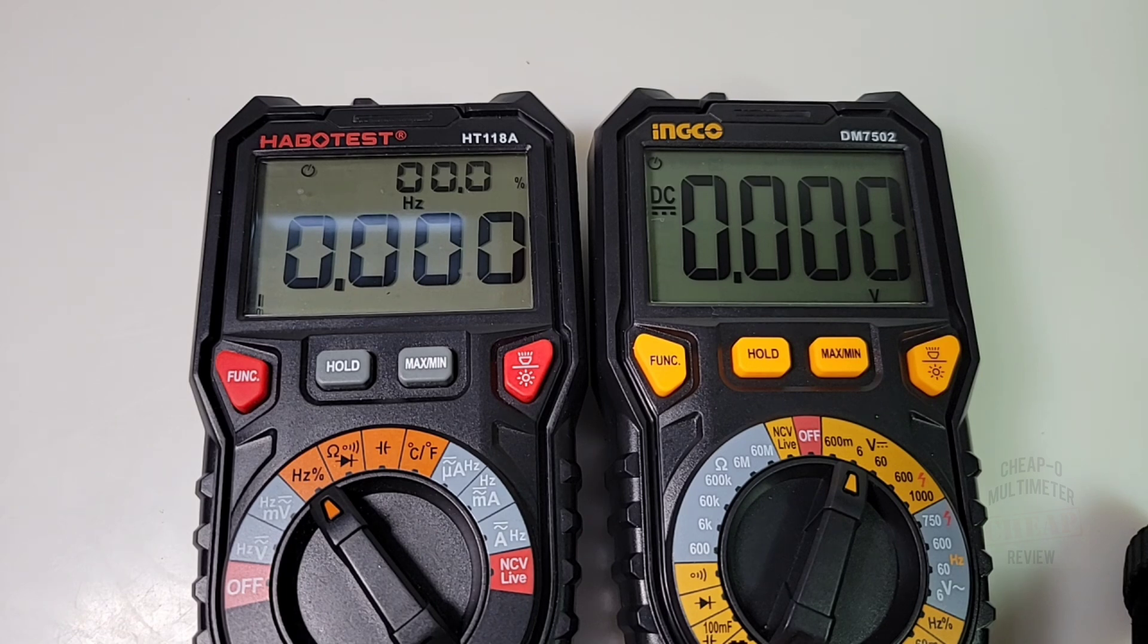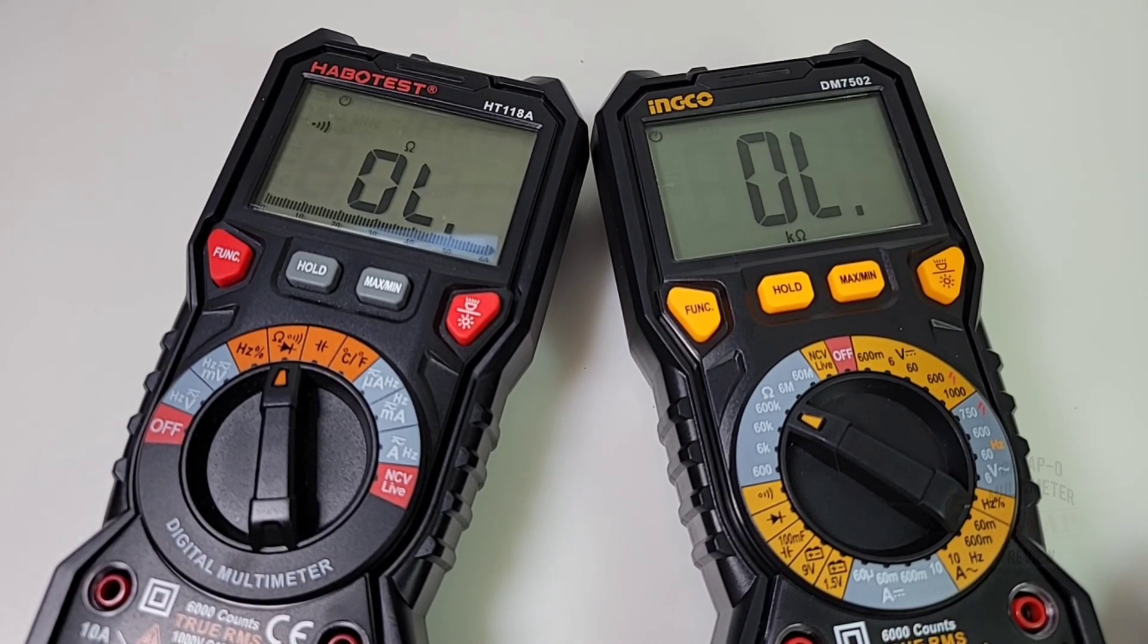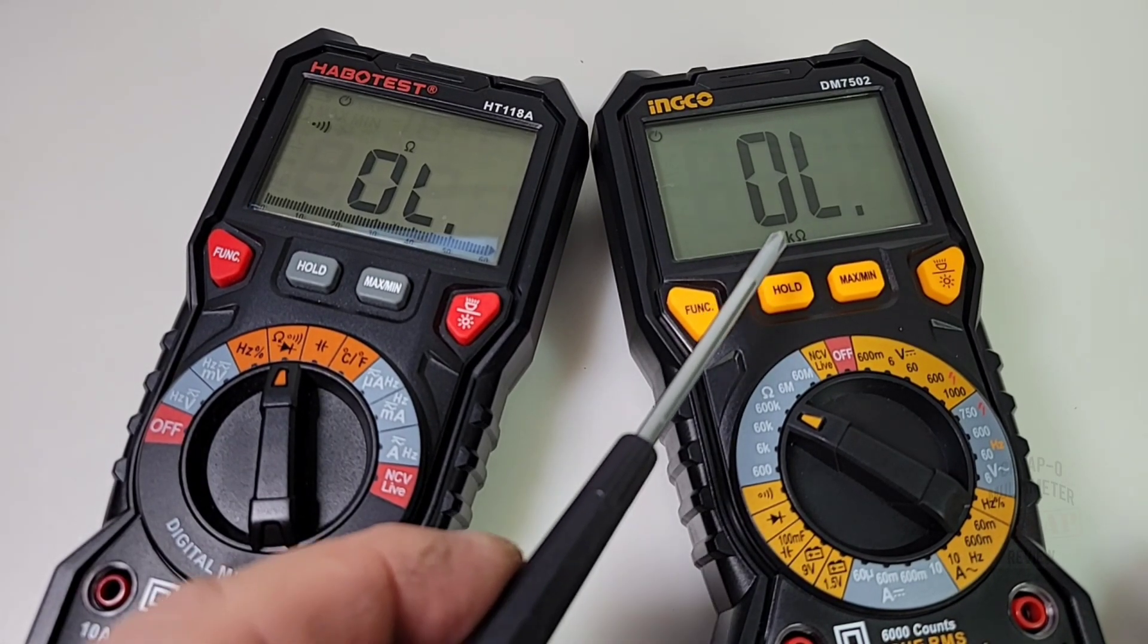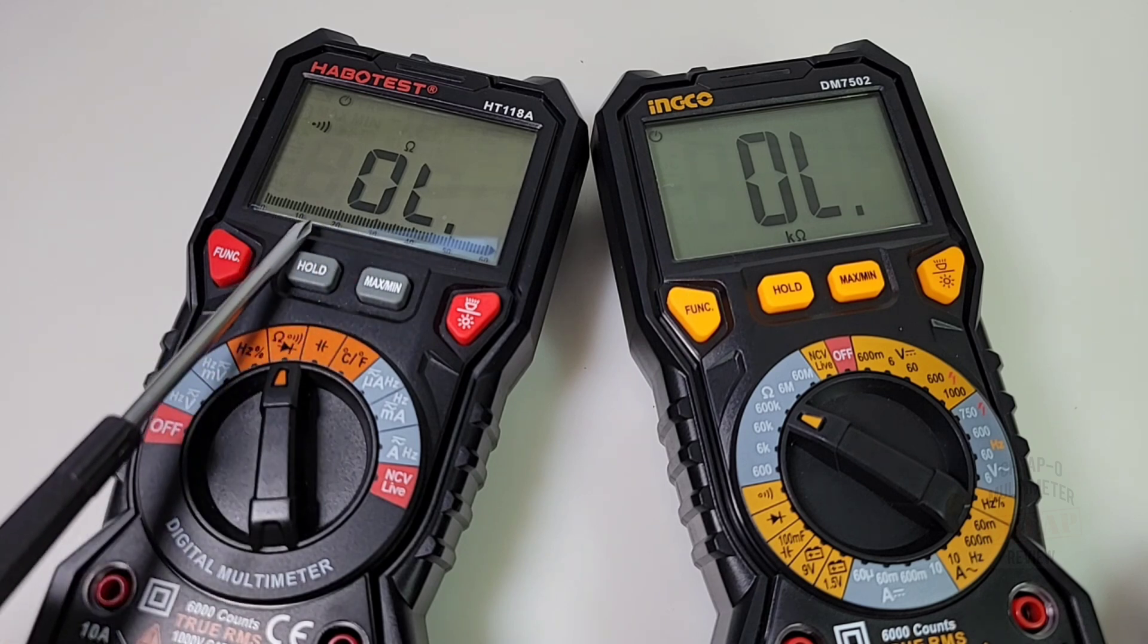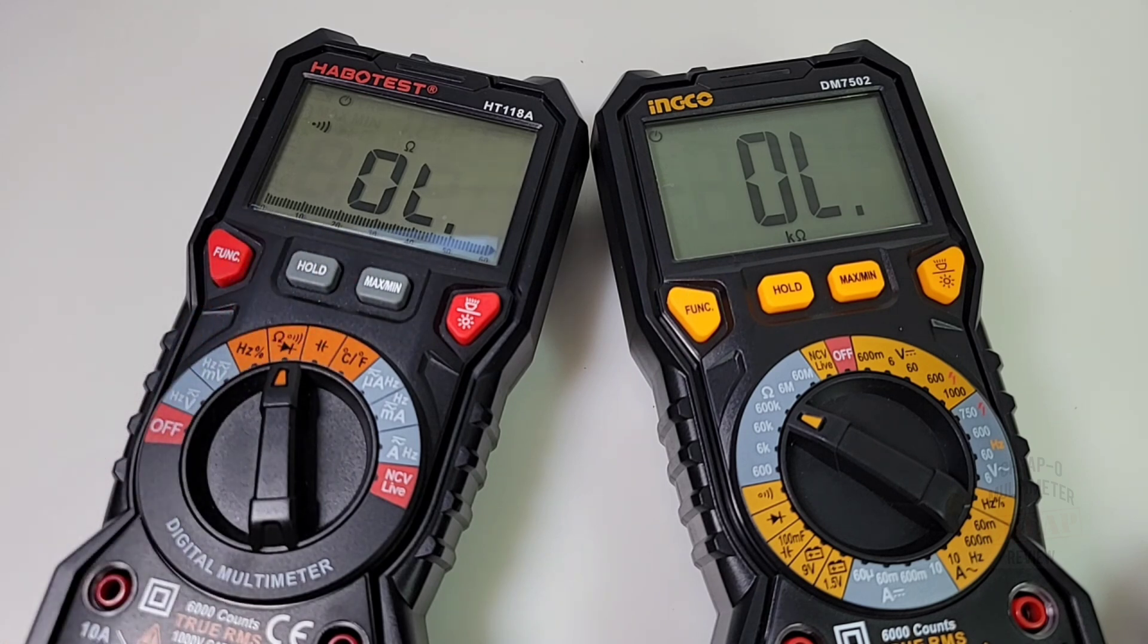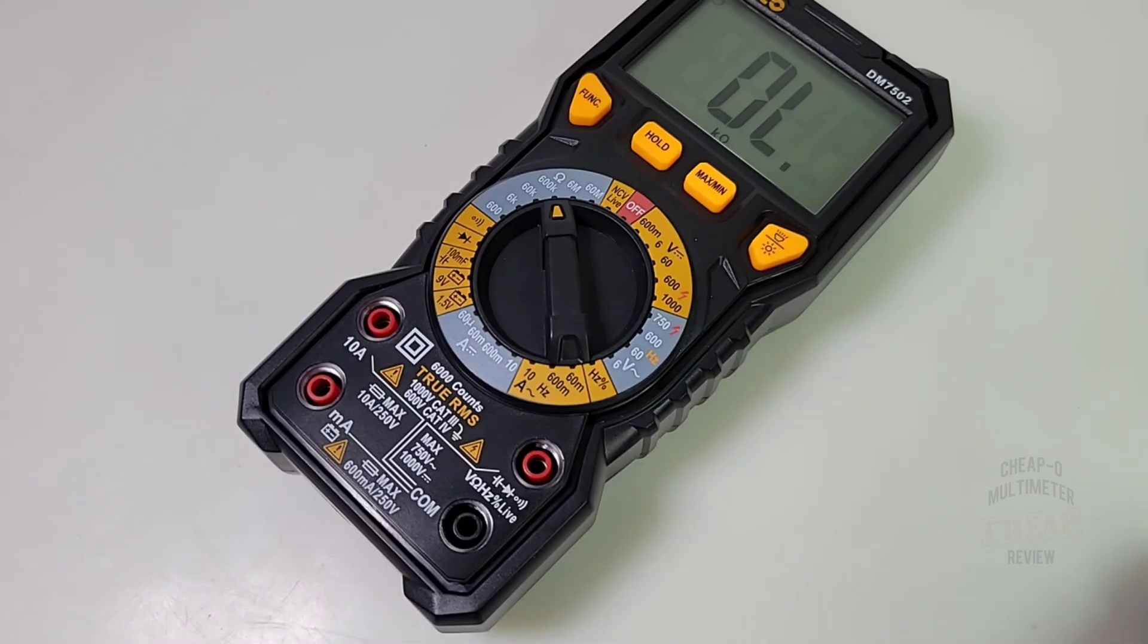Why do they do that? Something else that is seriously lacking is the fact of the absence of a bar graph. Unlike the Habotest, we have a bar graph. Not so on the Inco. That is sadly missed. So as you can see, a lot of similarities to the Habotest, but it's definitely a meter onto its own. Looks a little bit different. Acts a little bit different. Reacts a little bit differently. Let's see how it actually performs.